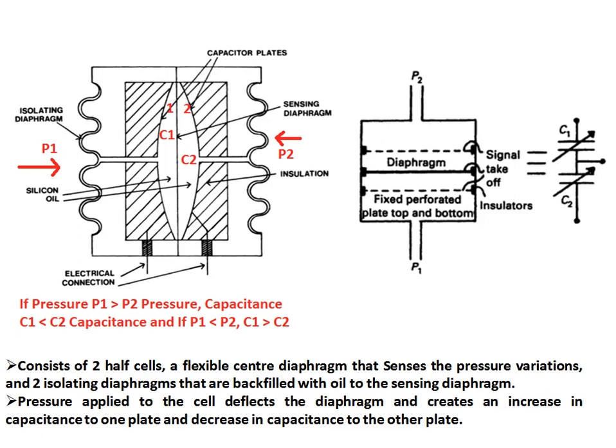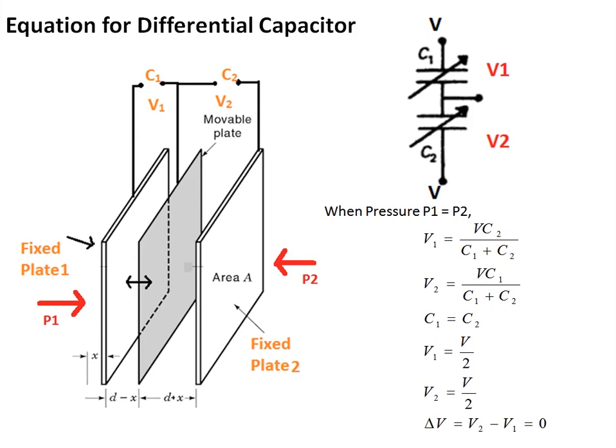The equation for the differential capacitance type DP transmitter is derived as follows. Whenever pressures P1 and P2 are equal, the voltages measured across the two capacitors are equal, and the differential voltage V2 minus V1 equals zero.